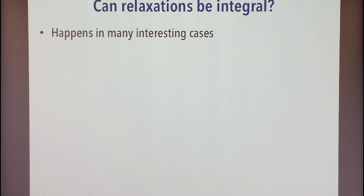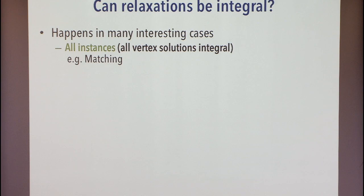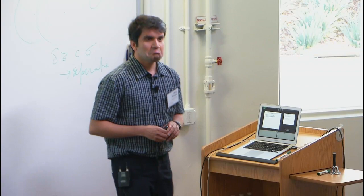The question I'm going to ask in this talk is: when does it happen that you apply this relax-and-round paradigm and you don't need the rounding step? Is it possible that you solve this relaxation, and it in fact solves the original problem you started out with? This happens in many interesting cases. There are some problems for which you can solve all instances this way, because basically all vertex solutions of this relaxation are integral.